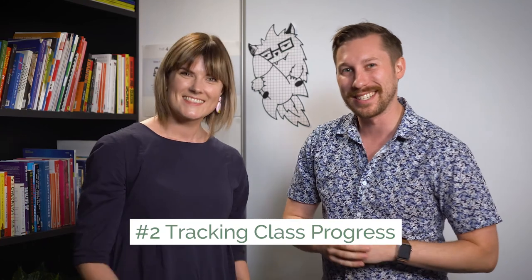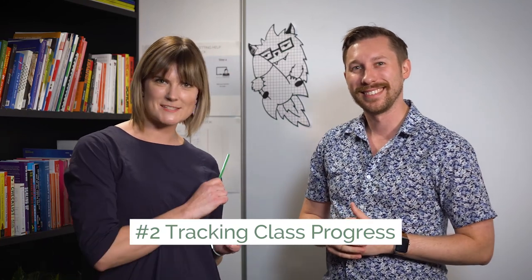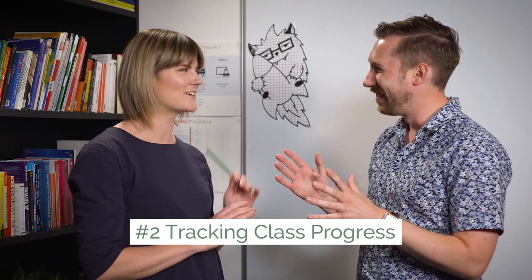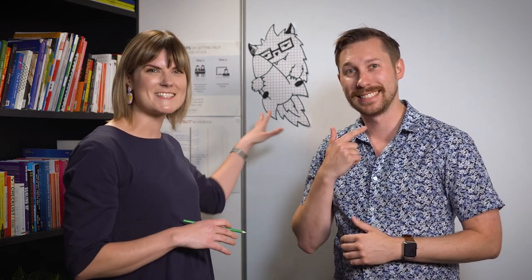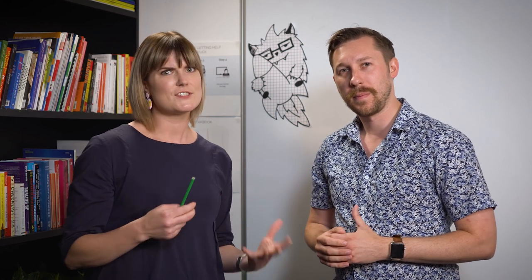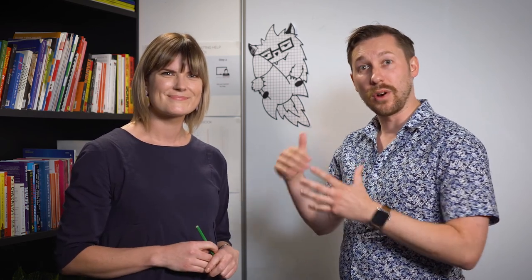Tip number two is all about tracking class progress. We have here a printout on graph paper featuring a growth monster — every time a student masters a module, they can come up and shade in one of those squares. If a student masters four or five modules on a test, they shade in that number of squares. Once the whole monster is shaded in, you can celebrate as a class.